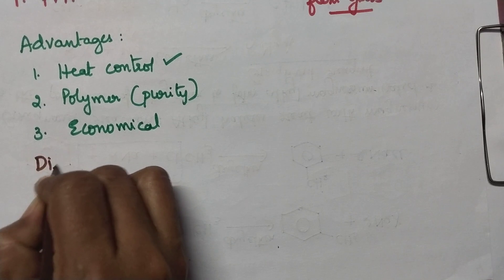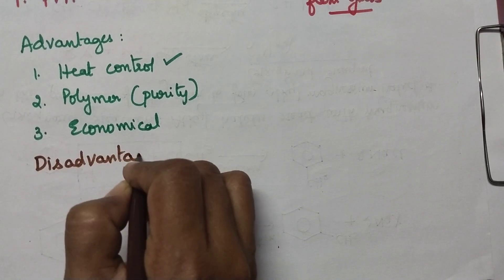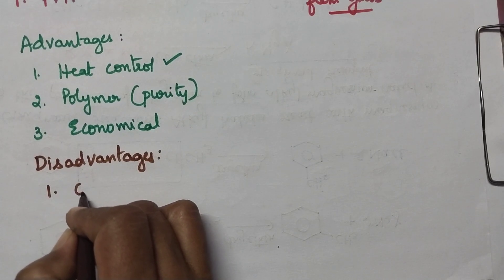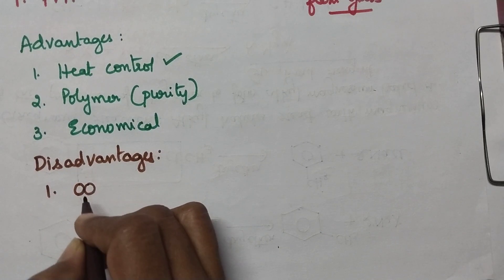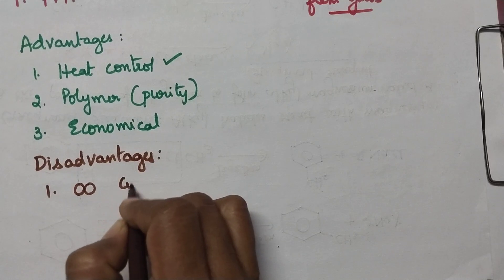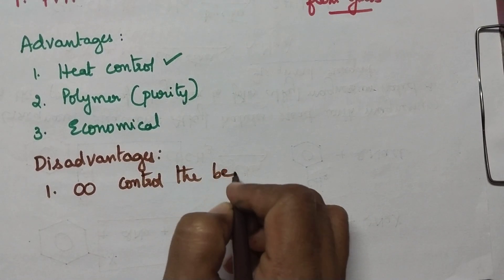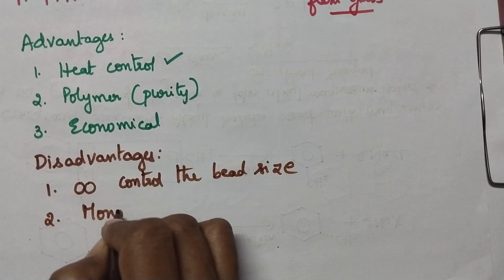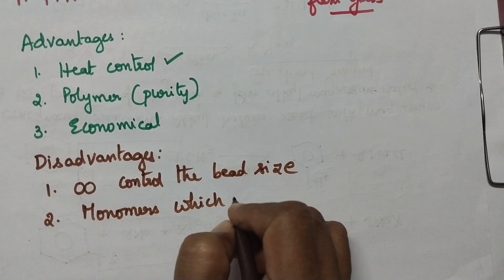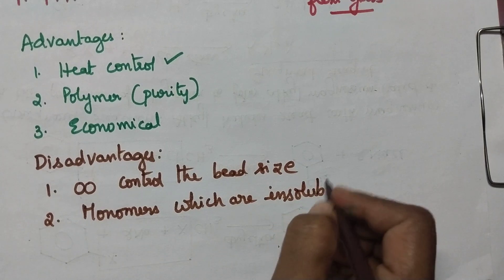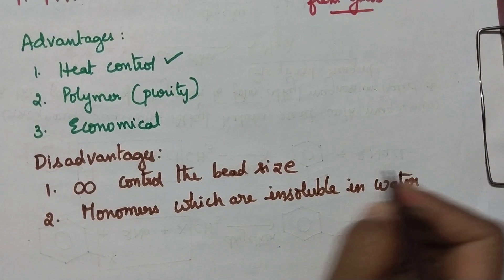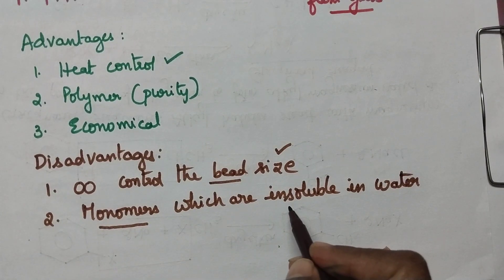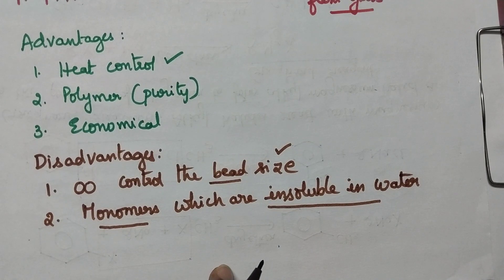Coming to the disadvantages of suspension polymerization: since polymerization takes place at each monomer droplet, sometimes two droplets may join together, making it highly impossible to control the bead size. At the same time, this technique is applicable only for monomers which are insoluble in water. So the disadvantages are: it may not be possible to control the bead size, and this technique is only useful for monomers insoluble in water.